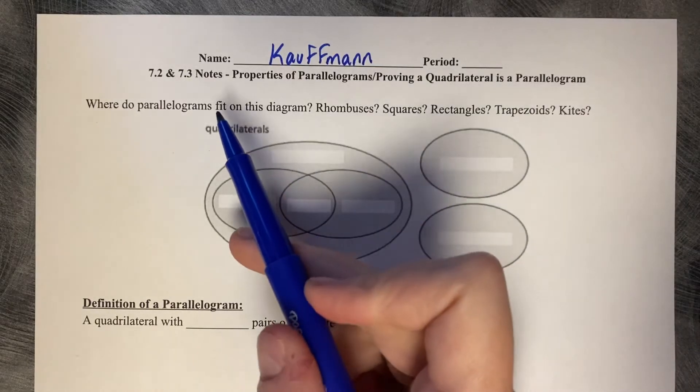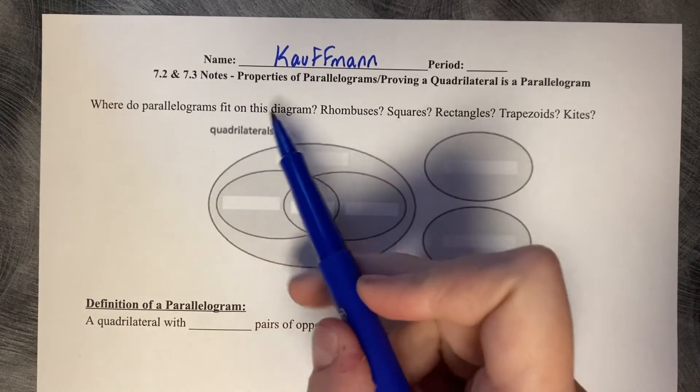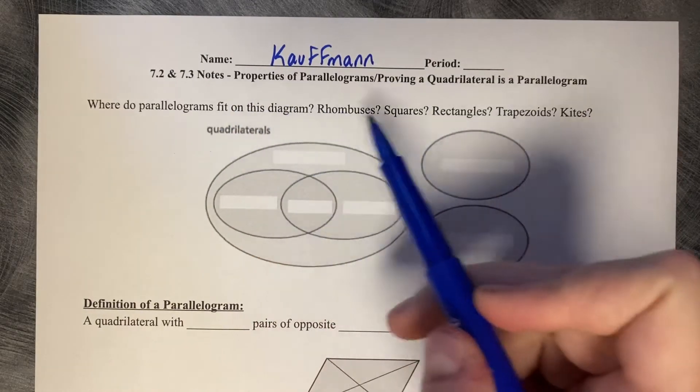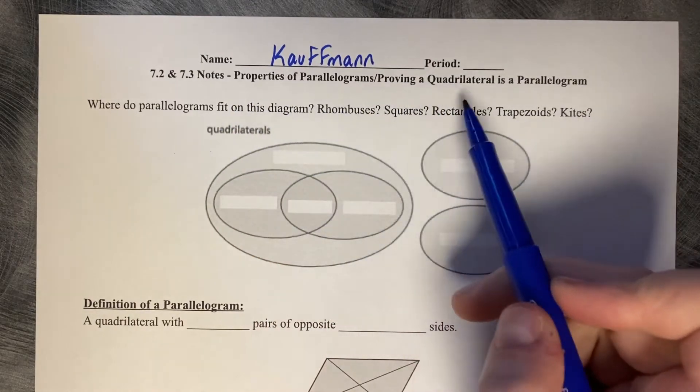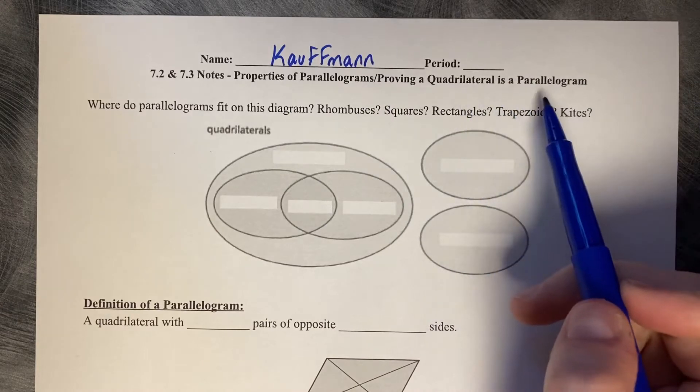7.2 and 3: Properties of parallelograms and proving a quadrilateral is a parallelogram.